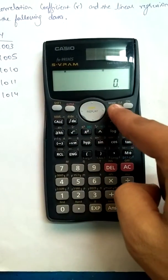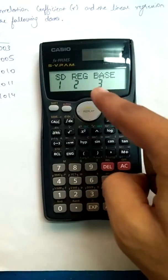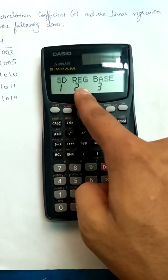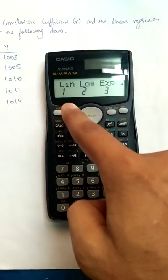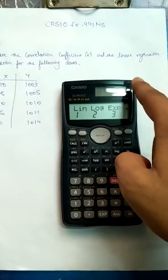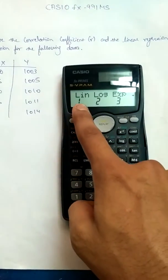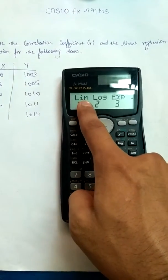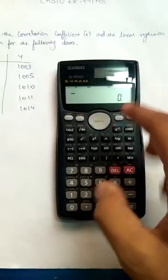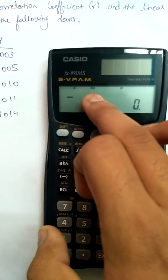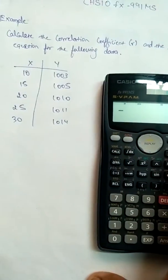On the calculator, first I'll press this mode button two times, then we have the regression option, so I'll press 2. We have to find the linear regression equation so I'll press 1, which stands for linear. Now I am in regression mode, you can see it here.